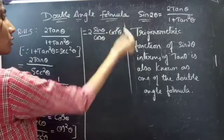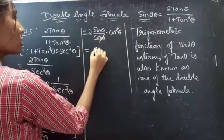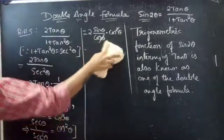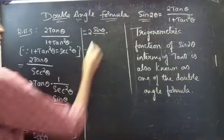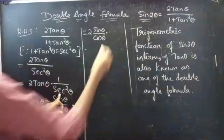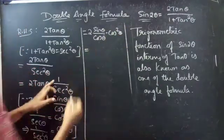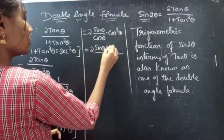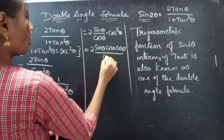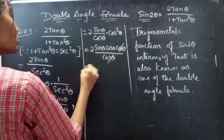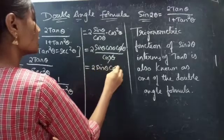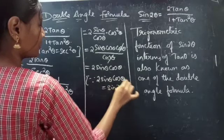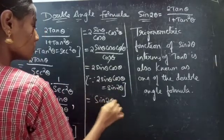Now cancel one cosθ from the numerator and from the denominator, so you get 2sinθ × cosθ. We can write cos²θ as cosθ × cosθ, then cancel one cosθ from numerator and denominator, so finally you get 2sinθcosθ. Since 2sinθcosθ = sin2θ, this equals sin2θ, which is LHS.